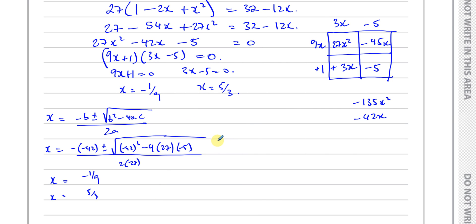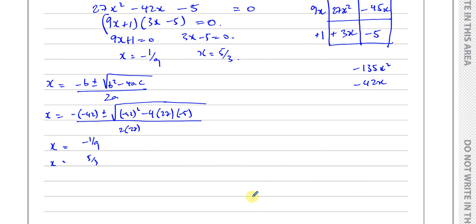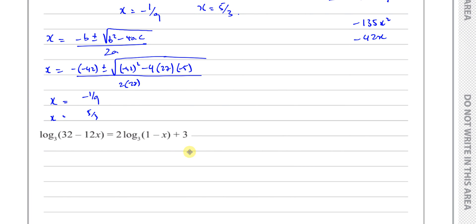One of those three methods must be shown — you can't just put the numbers in your calculator and get the answers. Now we have to make sure that our values satisfy the original equation, because sometimes you get values that cause it to be undefined. If any value causes the logarithm to have an argument of 0 or a negative number, it's undefined. So both values inside the log brackets must be greater than 0.